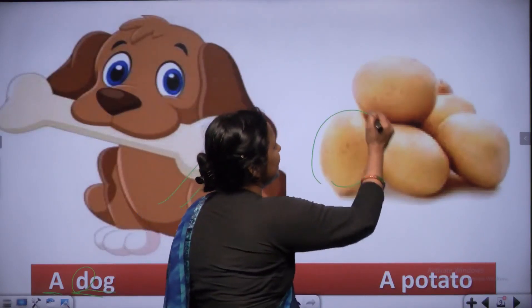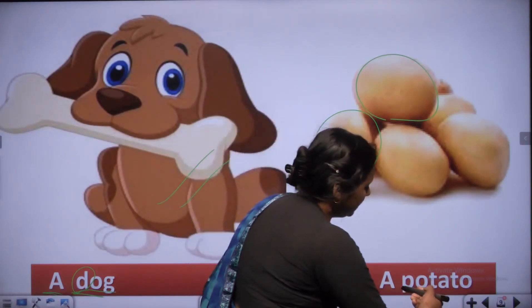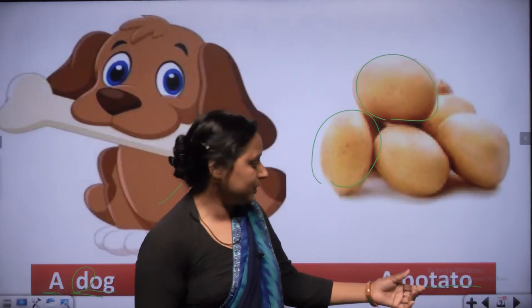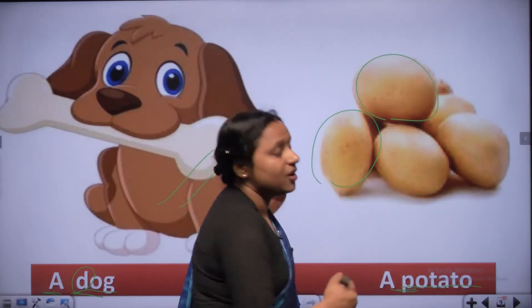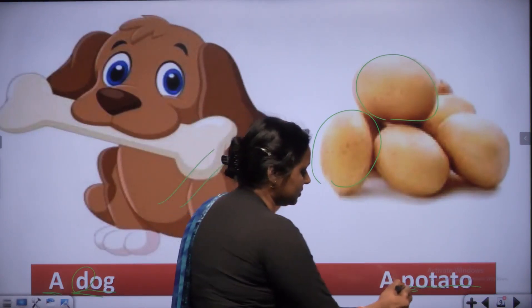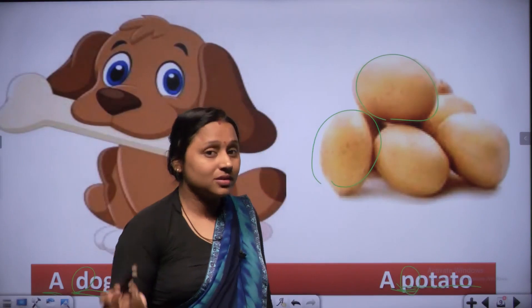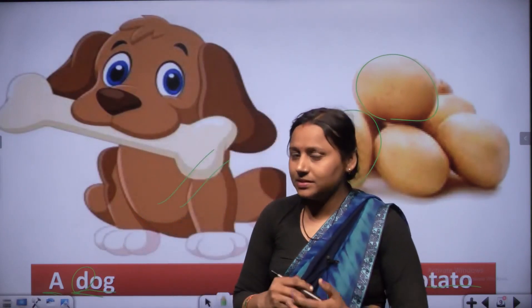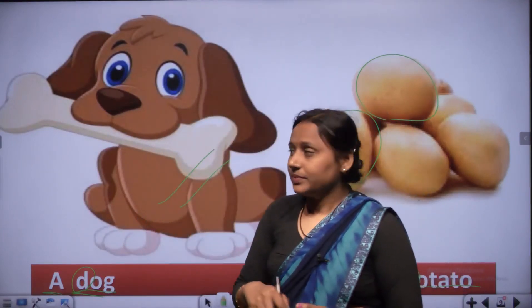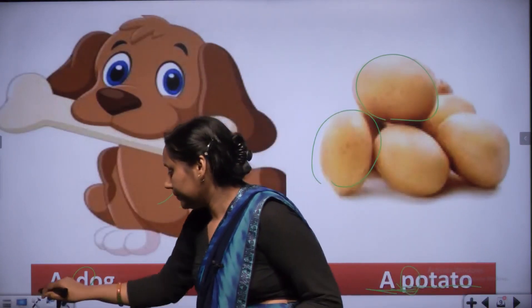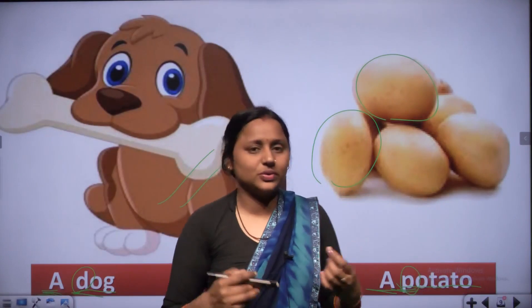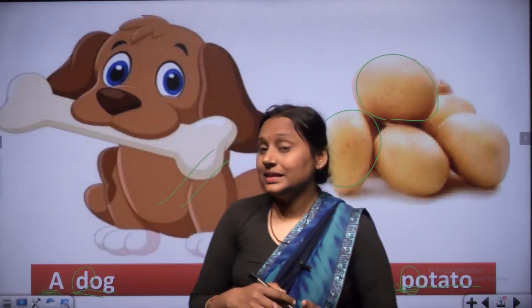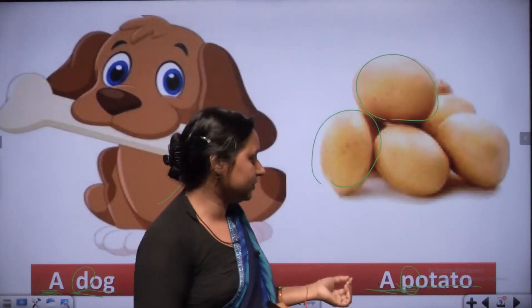This is a vegetable - P, O, T, A, T, O - potato. First letter P is consonant, so we use A - a potato. Here are so many examples: a dog, a cat, a potato, a peacock, a tomato. A is used only before consonant words - words starting with consonants.